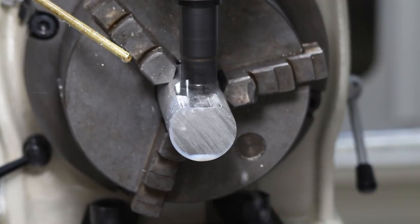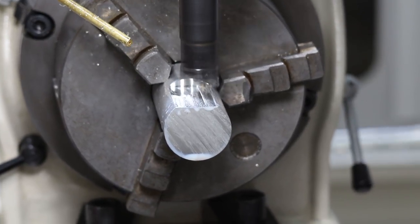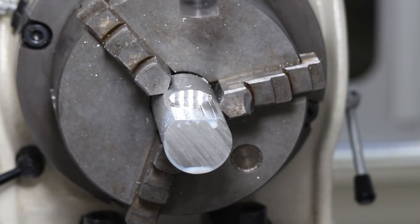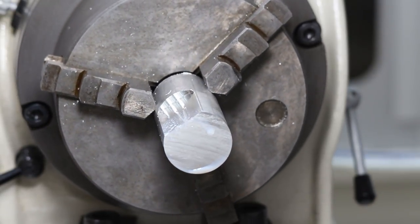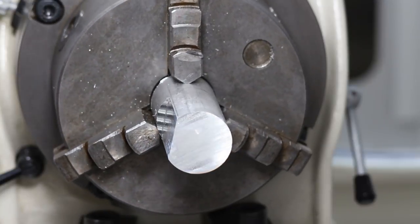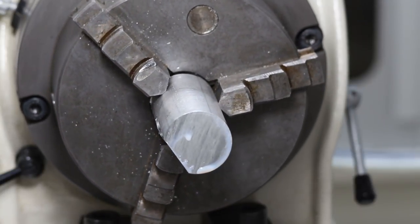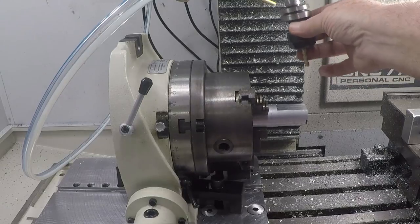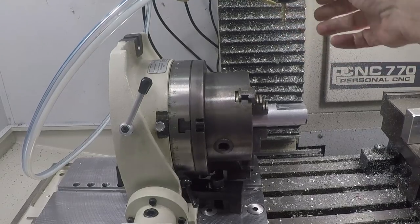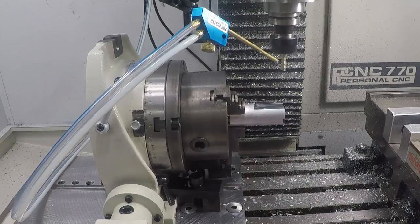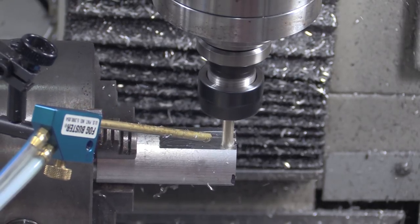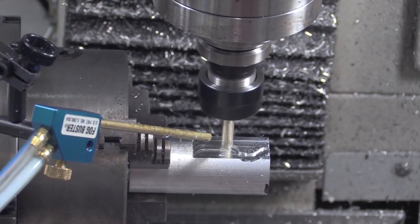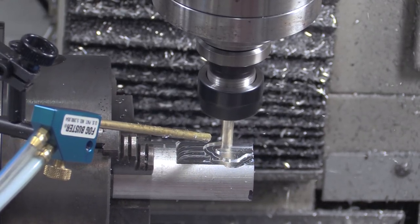This approach let me quickly hog away the material I wasn't going to need, and then the beauty of the fourth axis is that I can access four different sides of the part without having to refixture it. The end mills I'm using are from Lakeshore Carbide and are specifically made for machining aluminum. These end mills are capable of some pretty aggressive material removal rates.